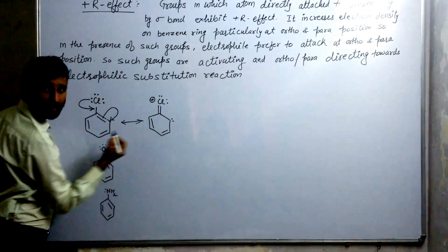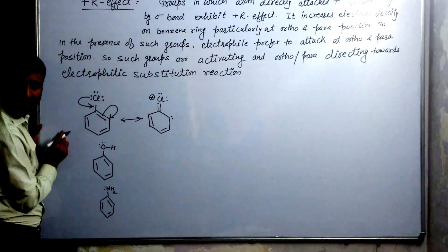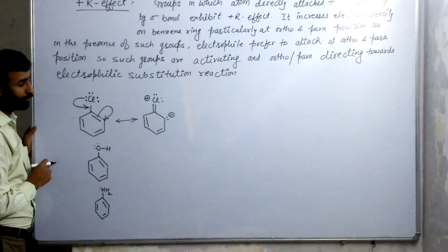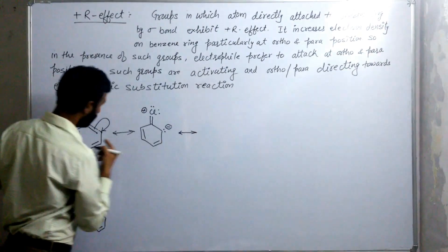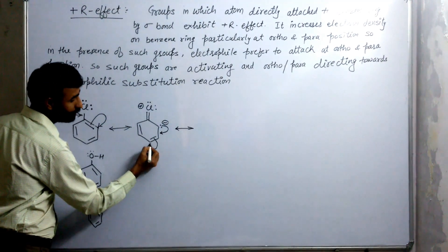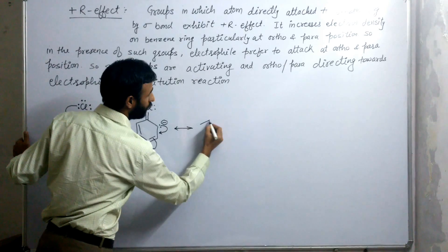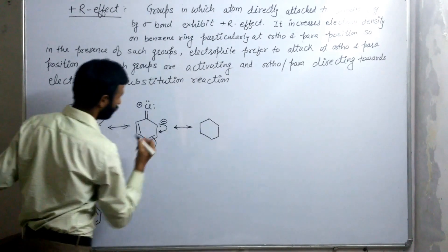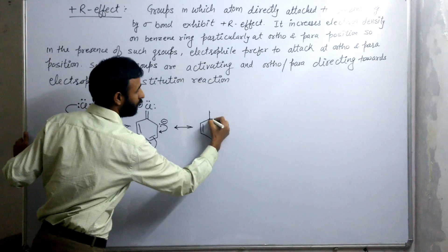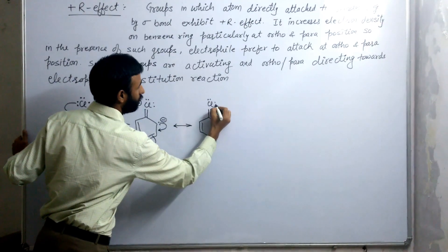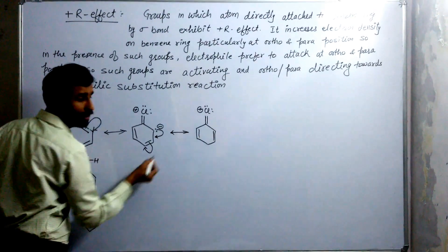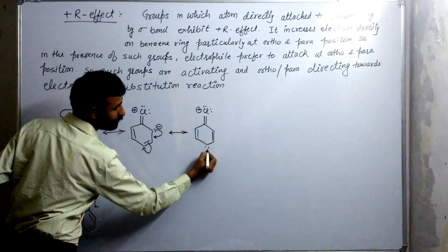This carbon again has a lone pair — it has gained one electron, so it acquires a negative charge. The same step is repeated: the lone pair again becomes a pi bond, and the pi bond becomes a lone pair. Again the same step, and we get the next resonance structure. This double bond remains as such, and now this lone pair becomes a double bond, and this double bond becomes a lone pair.